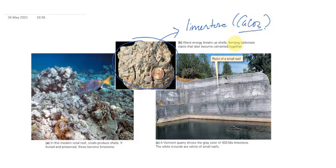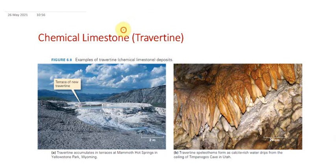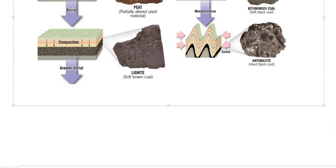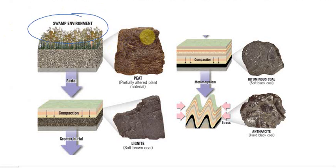There is also rock made up of broken shells — a type of limestone formed by CaCO3. Chemical limestone formed by CaCO3 precipitation is known as travertine, which can be found in lake terraces, hot springs, or in limestone caves where it forms stalactites and stalagmites. Then there is coal — decayed organic matter first forms peat, which then gets compacted into different types of coal. Coal is an organic sedimentary rock.